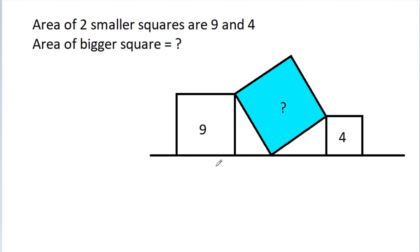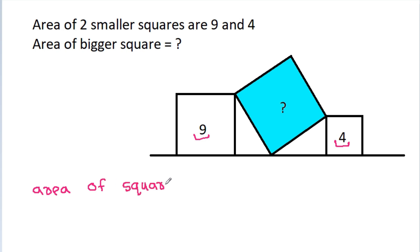In this video, we have given the area of two squares are 9 and 4. We have to find the area of this bigger square. The area of a square is equal to side squared. Since 9 equals 3 squared and 4 equals 2 squared, the sides are 3 and 2 respectively.